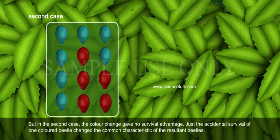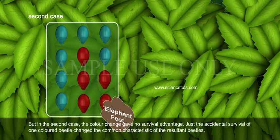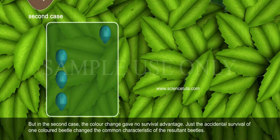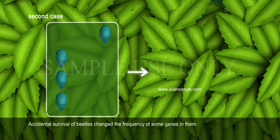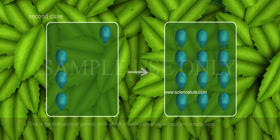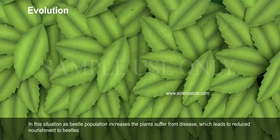In the second case, the color change gave no survival advantage. Just the accidental survival of one colored beetle changed the common characteristic of the resultant beetles. This accidental survival changed the frequency of some genes — this is the indication of genetic drift, which provides diversity without any adaptations.